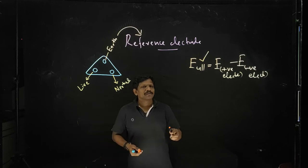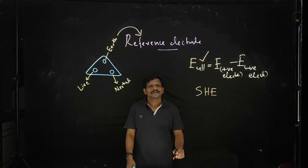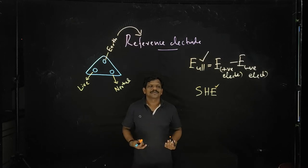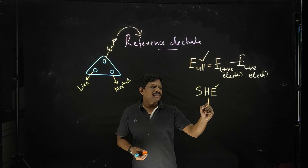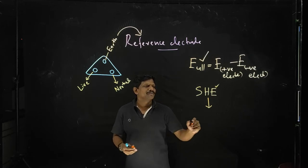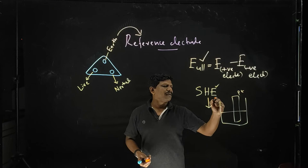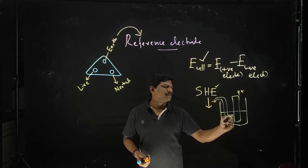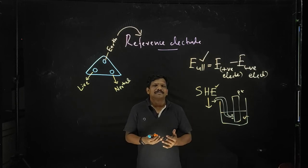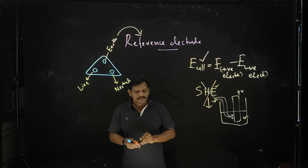Normally we are using the standard hydrogen electrode for the measurement of electrode potential — it can be considered as a reference electrode. But in the case of a standard hydrogen electrode, experimentally it is very complicated. The electrode is there with the platinum electrode, and you should bubble hydrogen to the electrode with a Cl⁻ solution. Handling hydrogen is very difficult — it is inflammable, and many problems are there. These types of systems are very complicated.